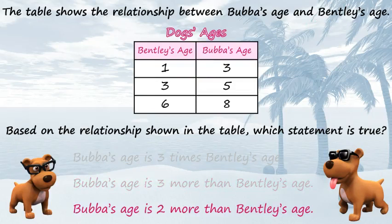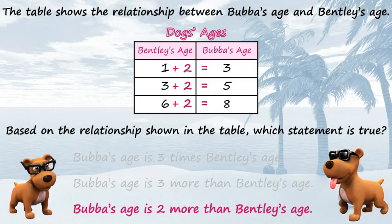Let's check our last option: Bubba's age is two more than Bentley's age, meaning we're adding two. One plus two is three — this works. Three plus two is five — this works. And lastly, six plus two is eight. That is the correct answer. Good job.